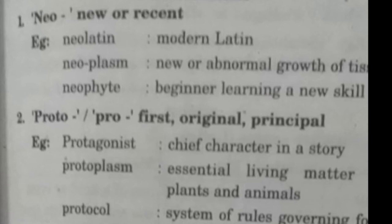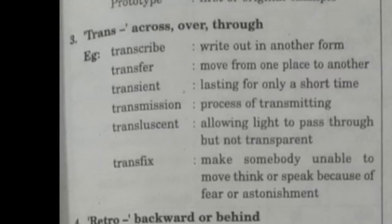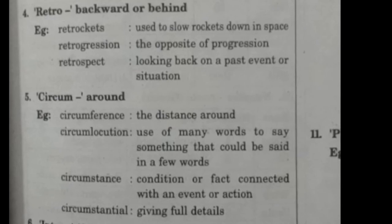The next prefix is 'trans,' meaning across, over, or through — for example, 'transcribe' (write out in another form) and 'transfer' (move from one place to another). The next is 'retro,' meaning backward or behind — for example, 'retrogression' (the opposite of progression, i.e., moving backward) and 'retrospect' (looking back on a past event or situation). In some novels, the story is told in the form of retrospection.